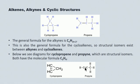Here's a more complex example. The longest chain that includes the unsaturated bond has eight carbons — an oct-ene. Specifically it's oct-3-ene, with the double bond between carbons three and four. There's also a side group on carbon five that is two carbons long — an ethyl group. So this is 5-ethyl-oct-3-ene.